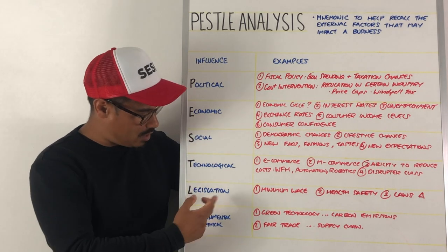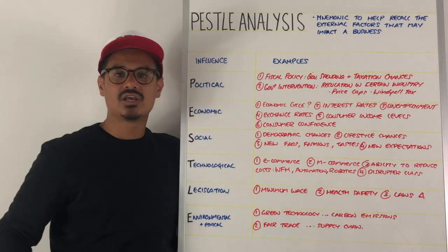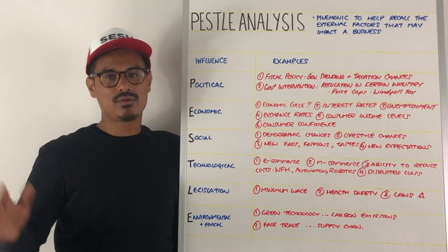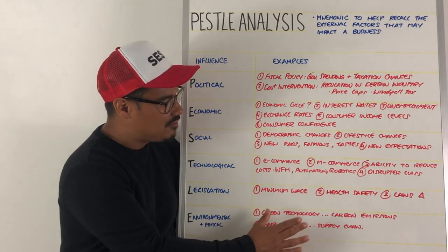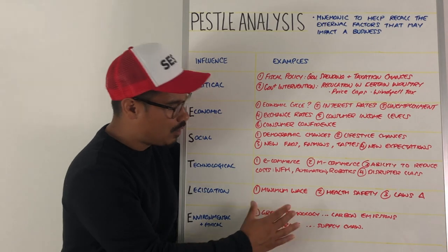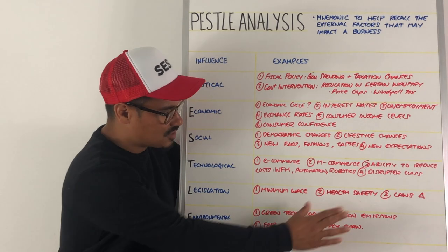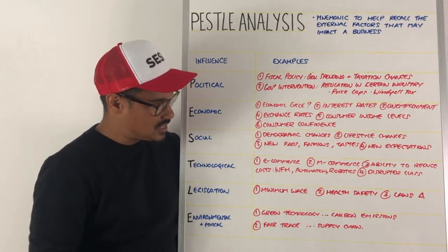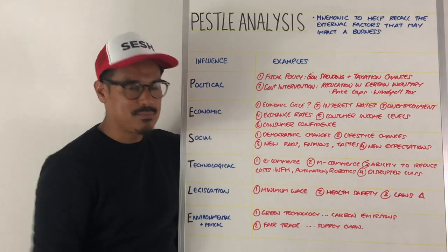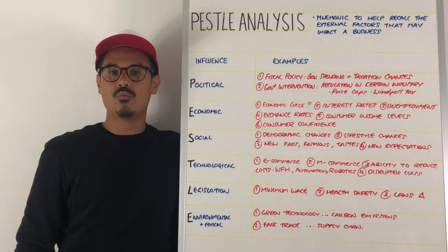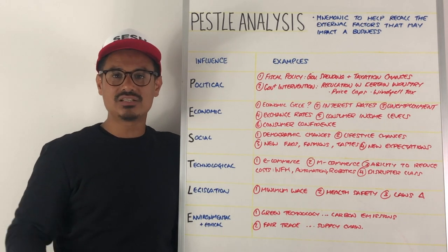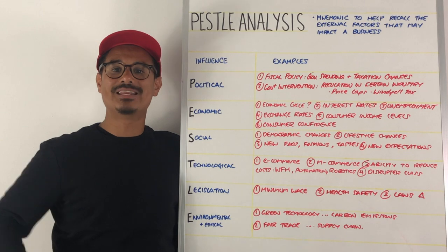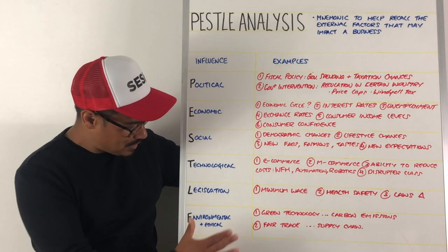Next is L — legislation. Minimum wages may increase, fall, or stay the same, including the national living wage for the over-24s. Health and safety rules will clearly change in terms of legislation, and there may be any form of change in laws — we've seen a lot of that recently with emergency legislation that has had to come in since the health crisis.